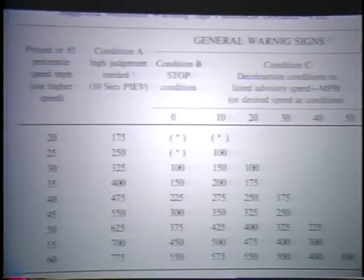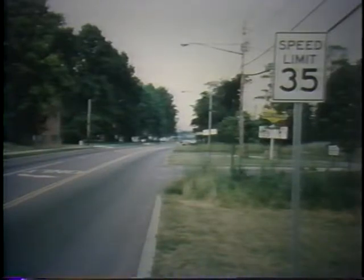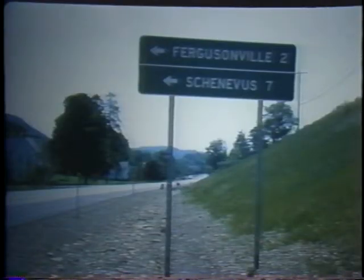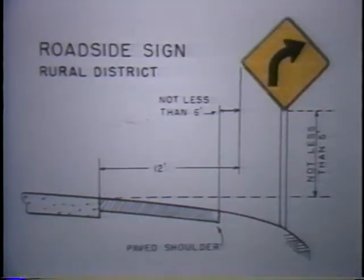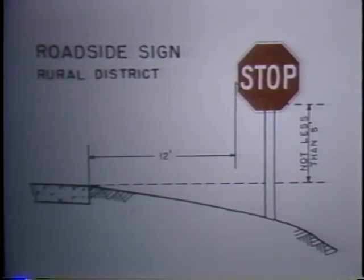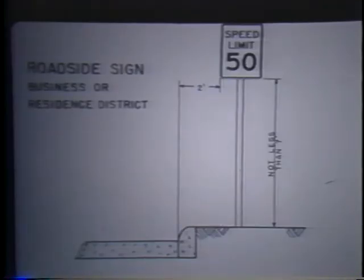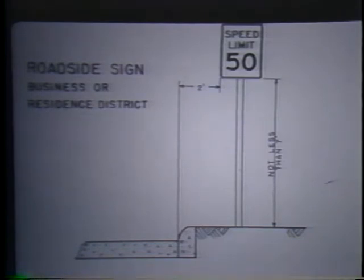The Manual on Uniform Traffic Control Devices recommends advanced longitudinal placement of warning signs as a function of speed and the hazard. Regulatory speed limit signs are placed at the beginning of the new speed zone. Guide signs and directional signing should be placed in advance of the needed movement. Lateral placement in relation to the pavement is also important to the legibility of signs. The Manual contains lateral placement recommendations for rural conditions, both with and without shoulders, always at least 12 feet from the edge of the roadway, and for urban conditions. In urban areas, the height of signs is not less than seven feet to the bottom of the sign panel, to take into account parked cars and pedestrians.